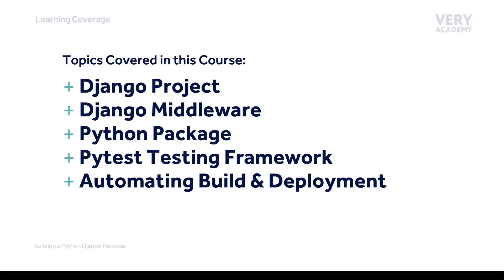There are five main sections of this course. First, we learn the basics of building a Django project, and then we move towards understanding how to build middleware and then go ahead and build our very simple middleware — a middleware which will inspect SQL queries executed by the Django application and print them out to the terminal. Once we have built the basic building blocks of our middleware, we then convert our code into a Python package.